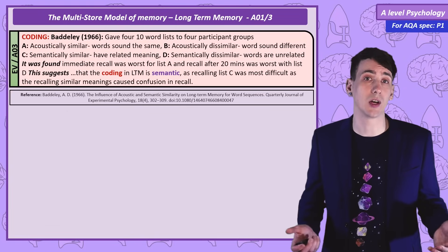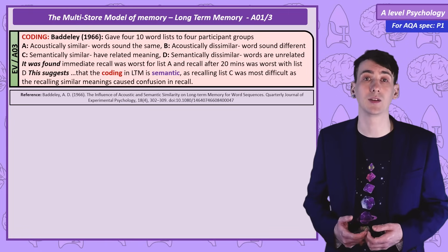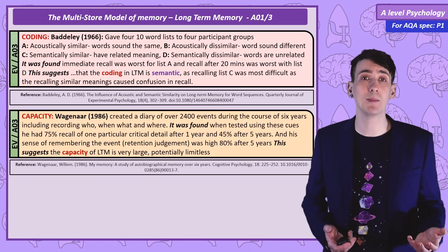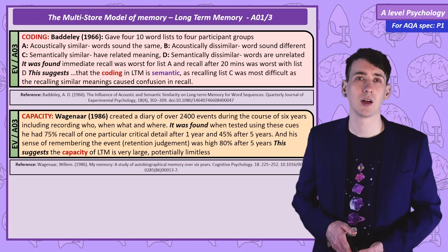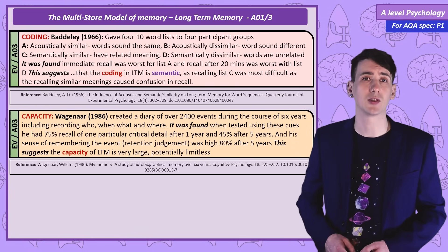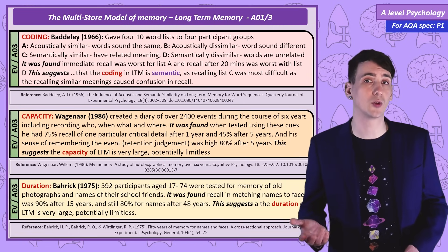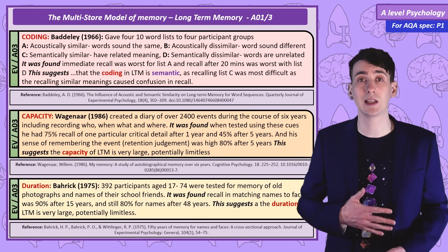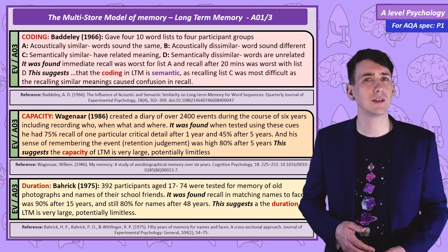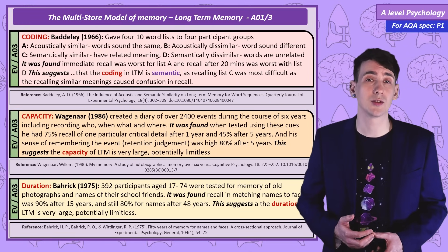Capacity and duration of long-term memory is potentially unlimited and there's no real way to test that, but two studies show it is very large. Researcher Wagenaar created a diary over six years with more than 2,400 entries, and when tested on events, there was 75% recall after one year and 45% after five years. Bahrick showed old photographs of school friends to participants aged 17 to 74 — after 15 years recall was 90%, and even after 48 years recall was 80% — suggesting the duration of long-term memory is very large, potentially unlimited.